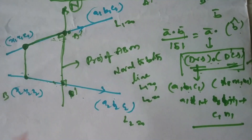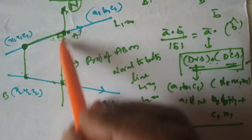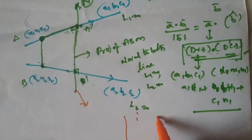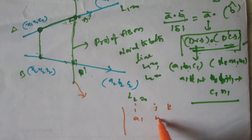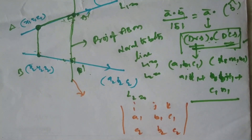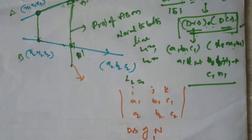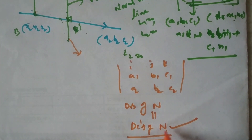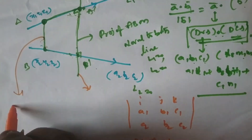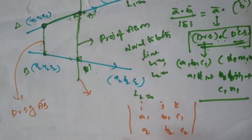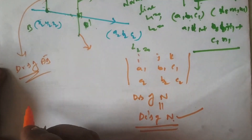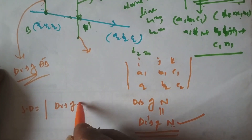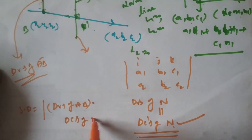So your job is to find the projection of AB on the normal. Find the direction ratios of the normal to both lines using the cross product determinant with i, j, k; A1, B1, C1; A2, B2, C2. From this we can find the direction ratios and hence the direction cosines of the normal. Once you know the direction ratios of AB and direction cosines of the normal, the shortest distance equals the modulus of direction ratios of AB dot direction cosines of N.